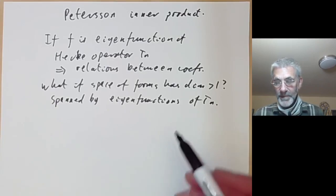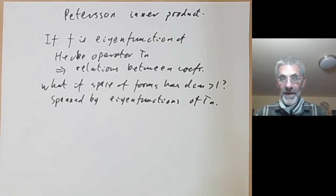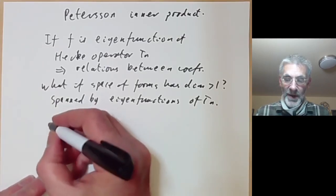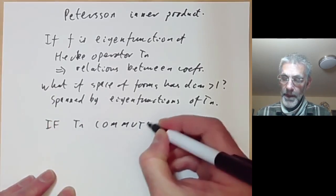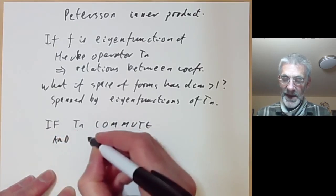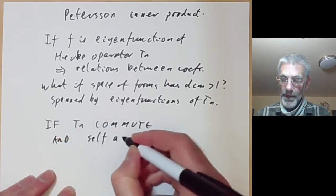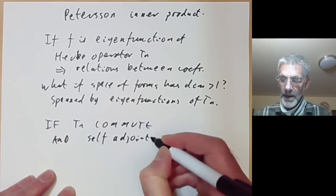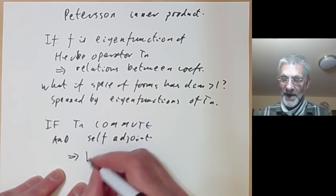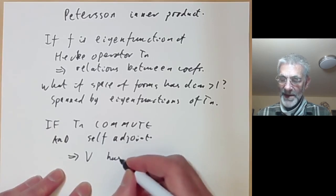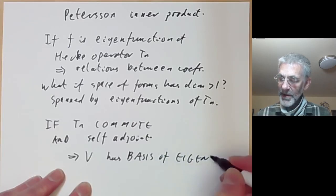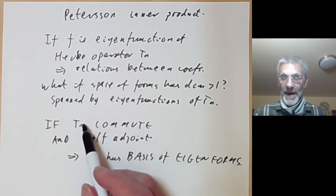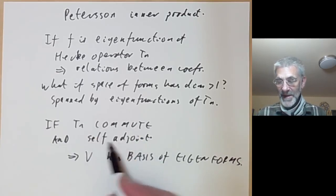In order to prove this, we recall the result from linear algebra which says that if the T_n commute and they are self-adjoint, then this implies that the vector space V they act on has a basis of eigenfunctions, or eigenforms. So what we want to show is that all the Hecke operators commute with each other and that they are self-adjoint. Self-adjoint means we need some sort of sesquilinear form on the space of modular forms, otherwise self-adjointness doesn't make sense.